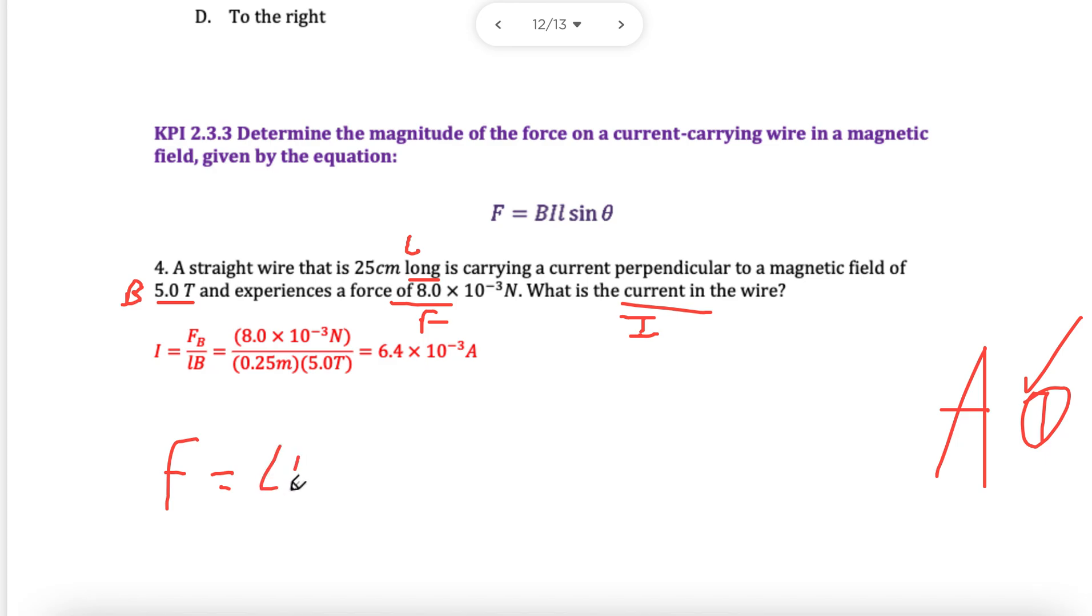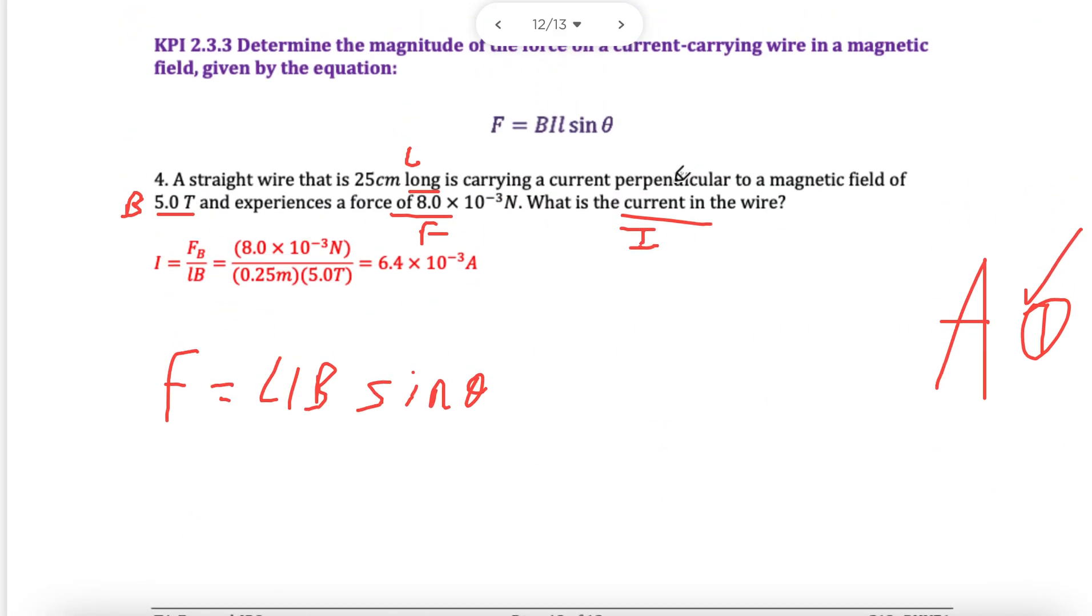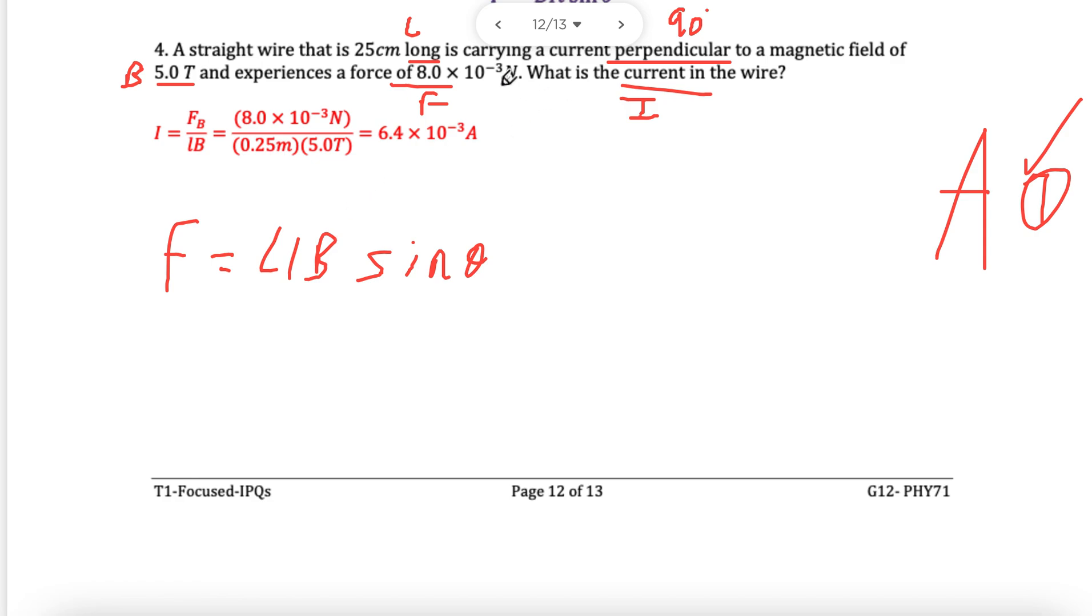We're going to use the formula F equals lib, sin theta, still. Sin of 90 is just going to end up being one again. This time, they decided not to write it. Perpendicular, that's why I know it's sin 90. Now, what's this? Lib, length 0.25 because it's centimeters, multiplied by 8. Oh no, it's not multiplied by 8. I don't need F, I have F. So we have to rearrange. 8 times 10 to the minus 3 equals 0.25 multiplied by the current, which I need, multiply that by B, which I have, and I'm going to ignore the sin theta. Shift solve or rearrange, and you'll get your answer.